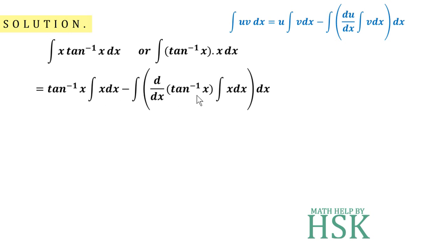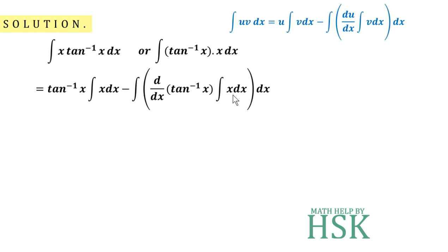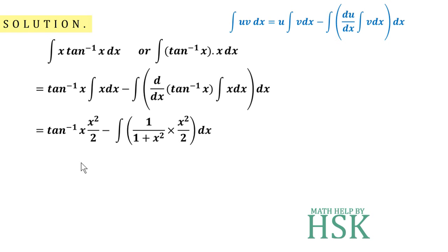Then we subtract the integration of the product of the differentiation of the first function and the integration of the second function. The integration of x is x²/2, the differentiation of tan⁻¹(x) is 1/(1+x²), and the integration of x is again x²/2, using the formula ∫xⁿ dx = xⁿ⁺¹/(n+1).